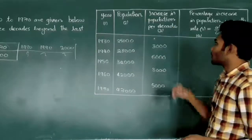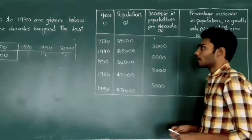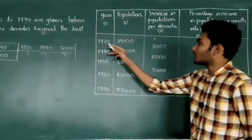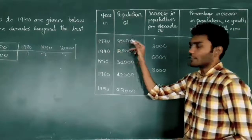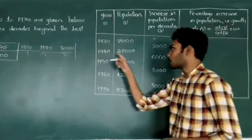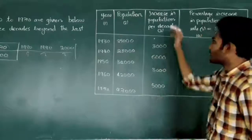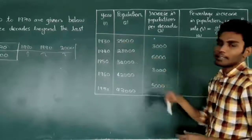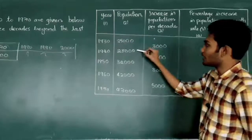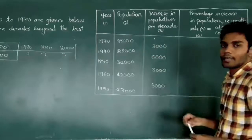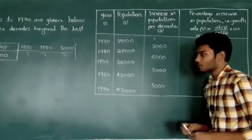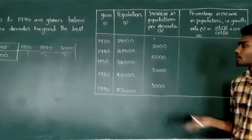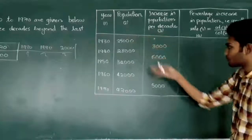The values of increase in population per decade can be obtained by subtracting the values. For example, in 1930 the population was 25,000 and in 1940 it was 28,000. We just subtract to get the increase in population: 28,000 minus 25,000, which is 3,000. In the same way I have obtained the other values.